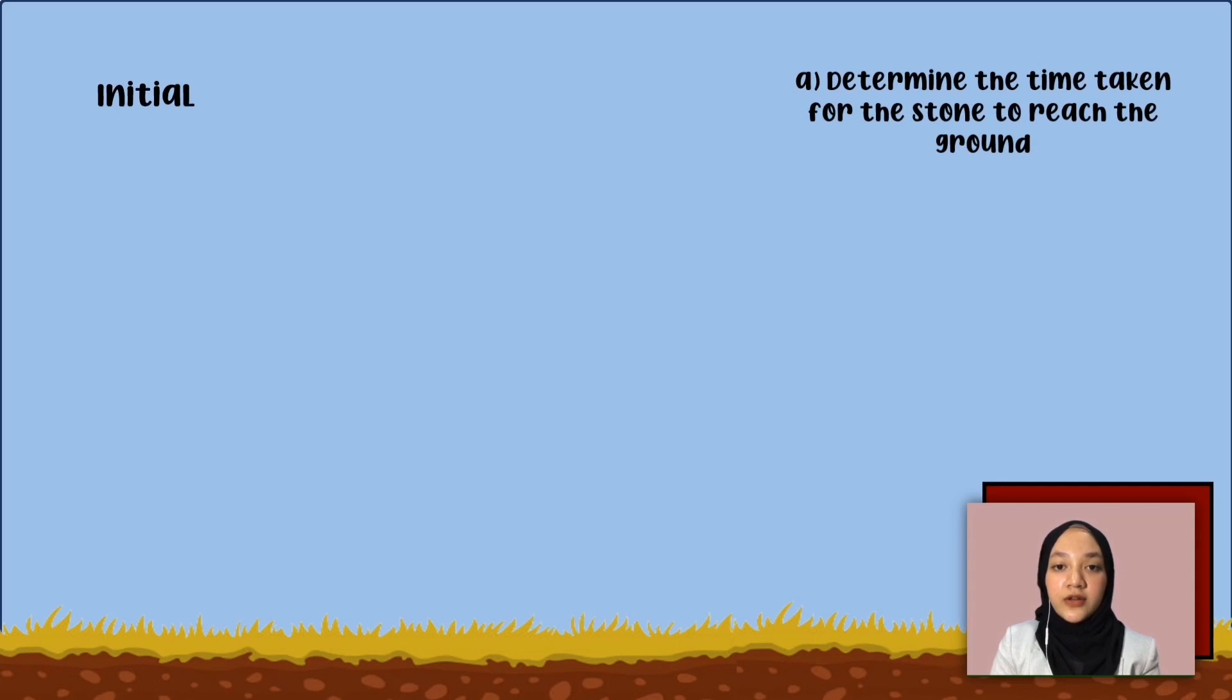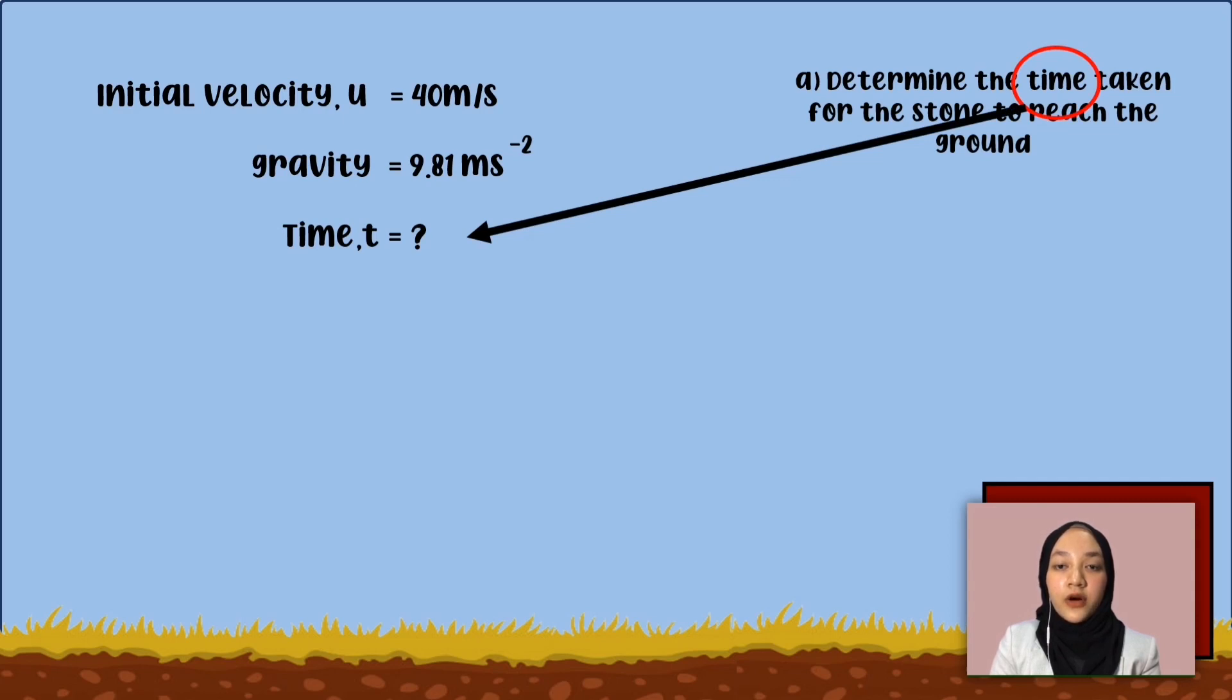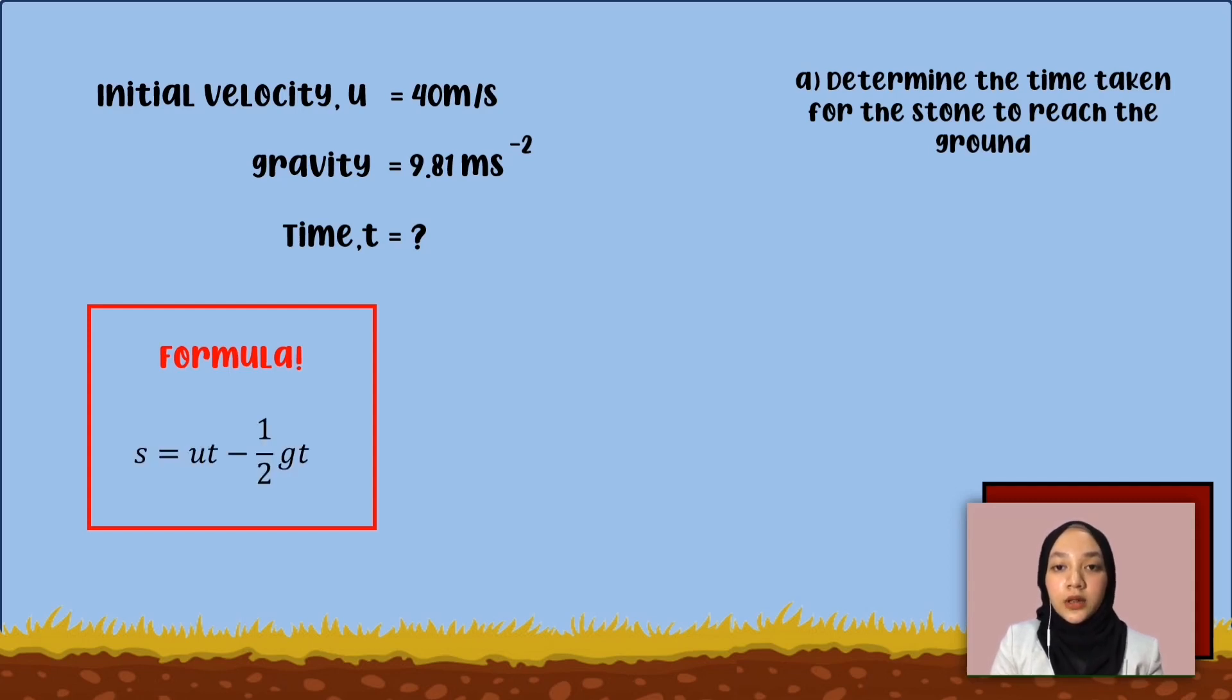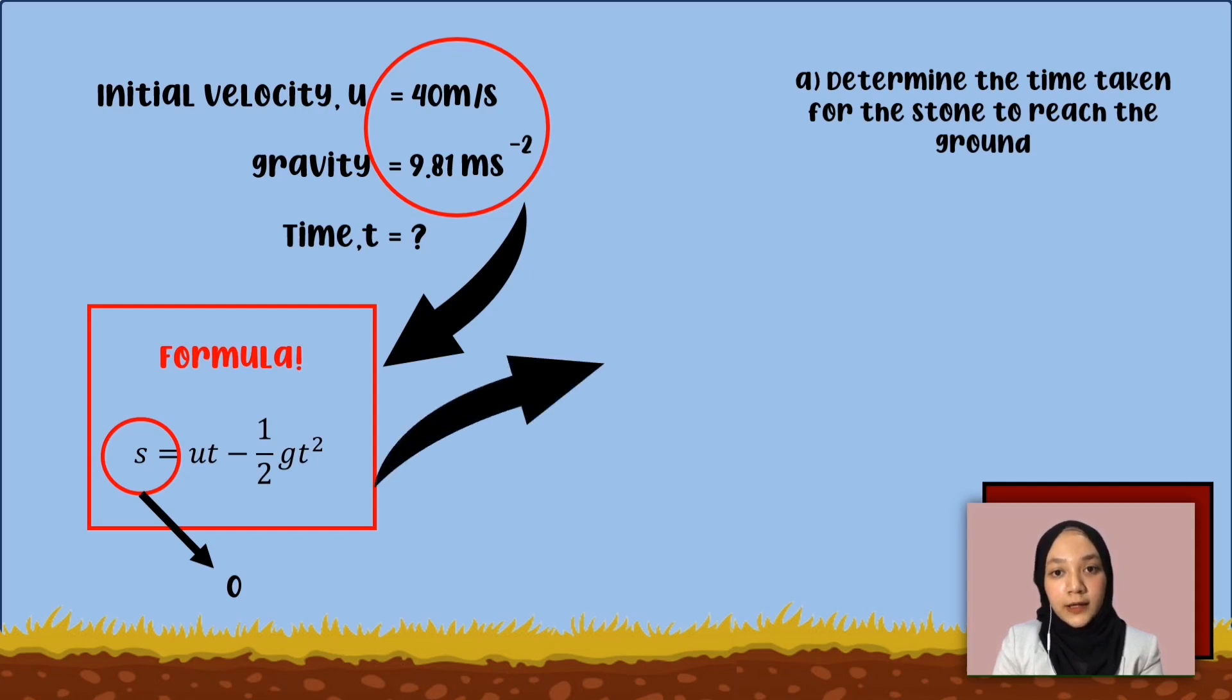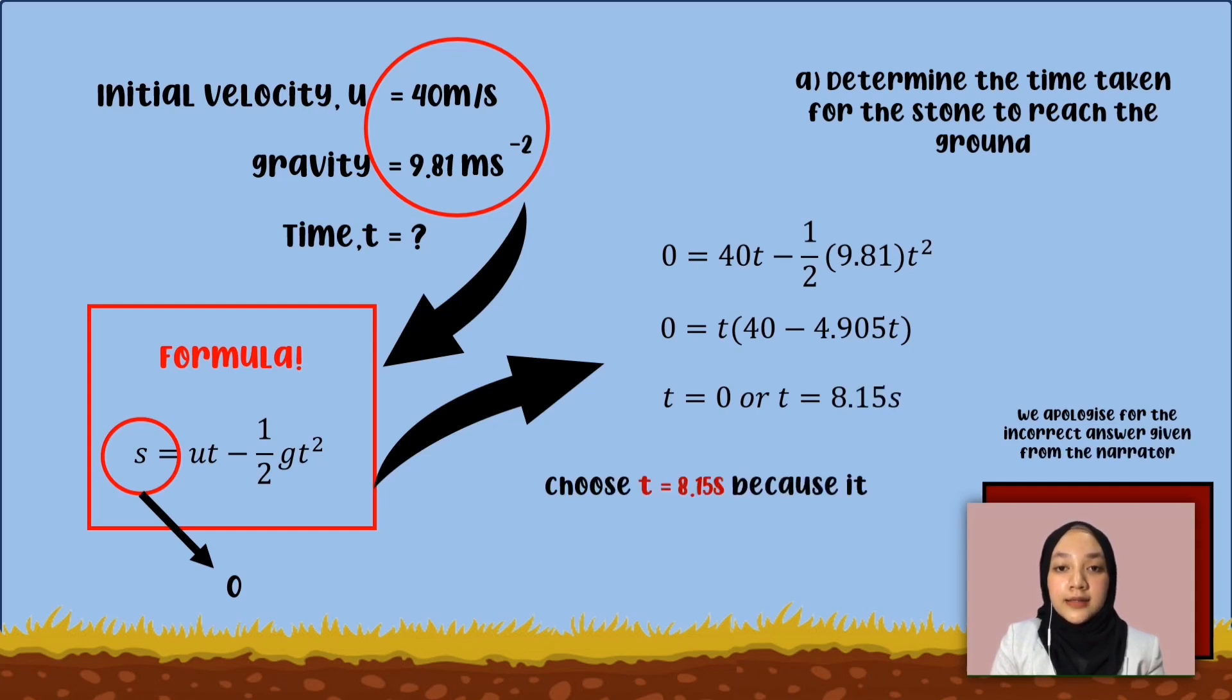Firstly, the initial velocity of the stone is given by U equals 40 meters per second. The gravity as we know is 9.81 meters per second squared. To find the time T for the stone to reach the ground, we need to apply the formula as shown, which is displacement equals initial velocity multiplied with the time minus one-half gravity multiplied with time squared. We assume that the displacement is zero, then we substitute the initial velocity and gravity value in the formula. By doing the calculation, we obtain that the time for the stone to reach the ground is 8.60 seconds. It is impossible that the time taken to the ground is zero, right?